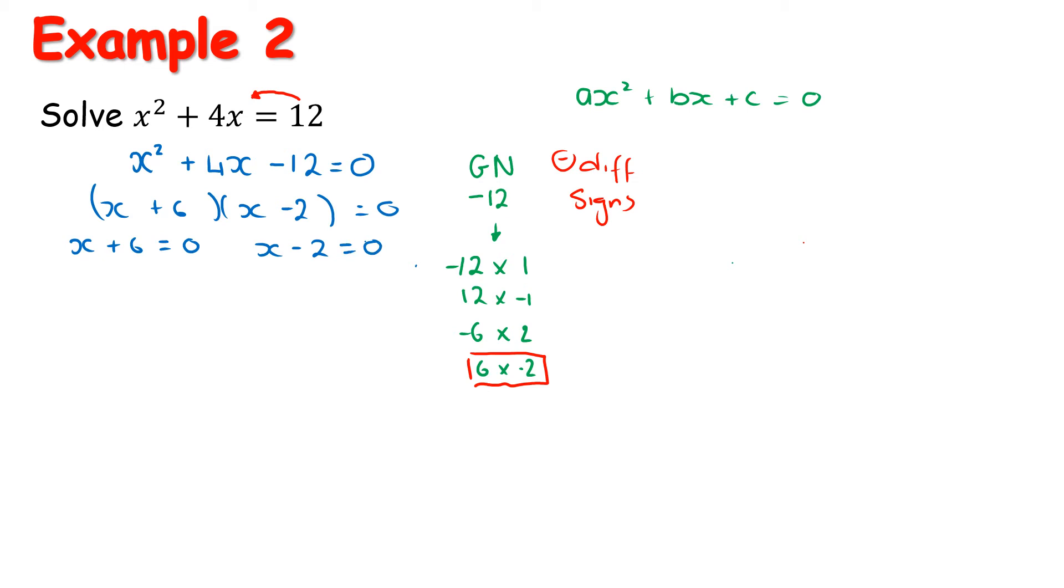And using the logic of either taking a 6 from both sides or moving that plus 6 across, we get x = -6. And here, the same, we get x equals, and in this case, adding 2 to both sides. So x = 2.